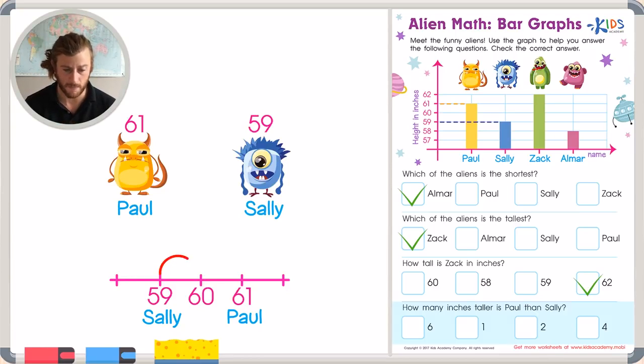So from 59 to 60, that's one. From 60 to 61, that's another one. So I can see there's two jumps, which equals two inches. But just to prove it even further, we can add the one jump plus the other one jump. And we know that one plus one equals two. So Paul is two inches taller than Sally.